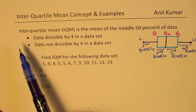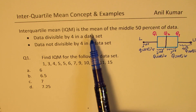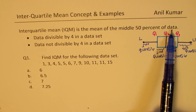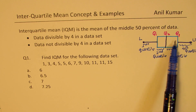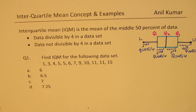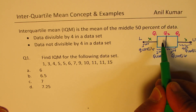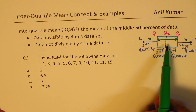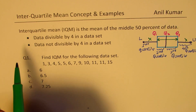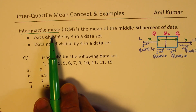When we talk about interquartile mean, we are actually finding the mean of the middle 50 percent of the data. That is this middle portion. We assume that the outer portions have been excluded and we are working within this 50 percent of the data.